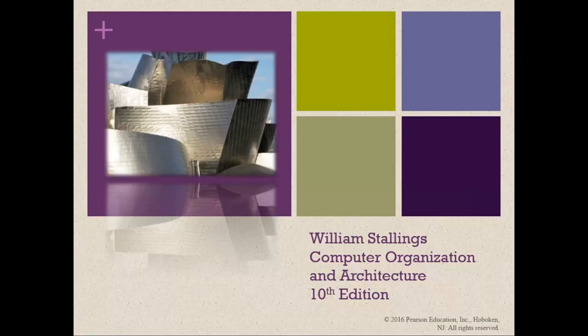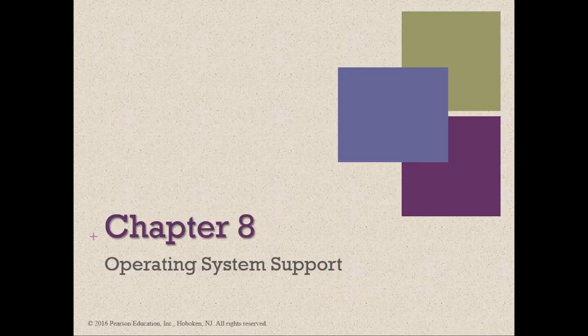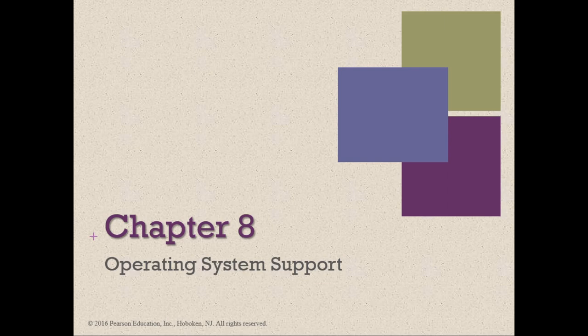Good day to all of you. We are on Chapter 8 of William Stallings' Computer Organization and Architecture, 10th edition — all about operating system support. Although the focus of our lesson is computer hardware, there is one area of software that needs to be addressed: the operating system, or OS. The OS is a program that manages the computer's resources, provides services for programmers, and schedules the execution of other programs.